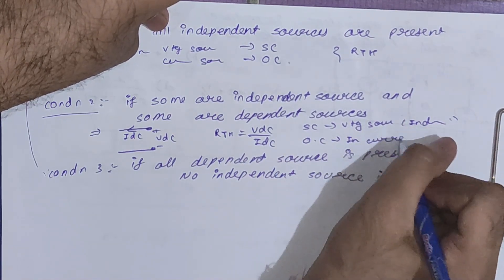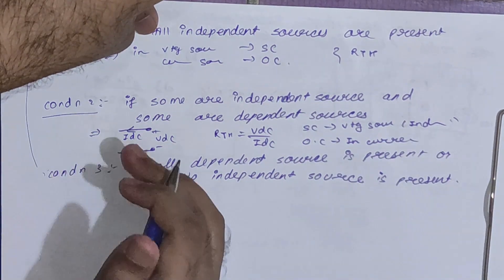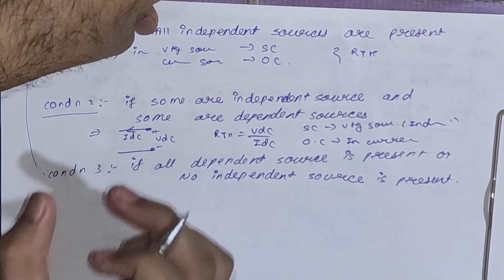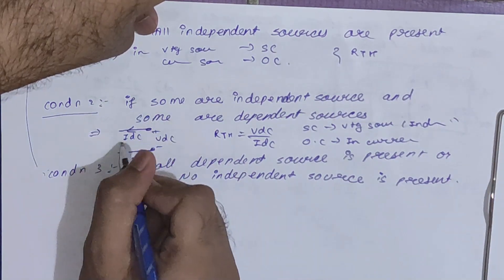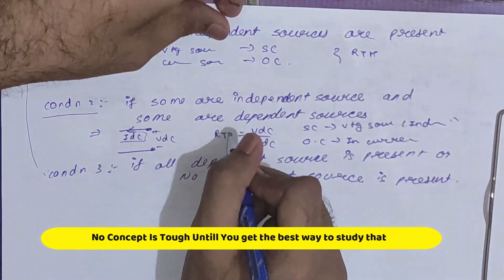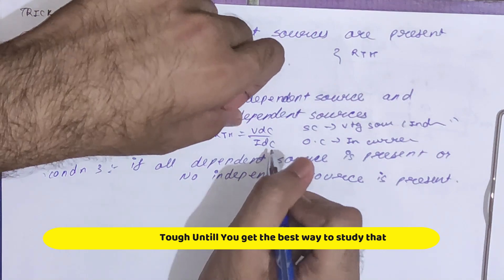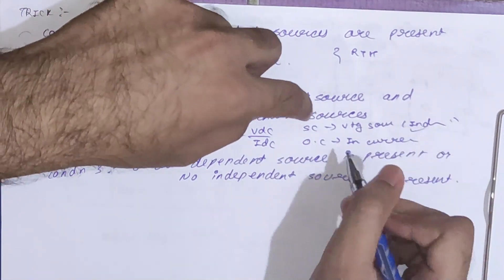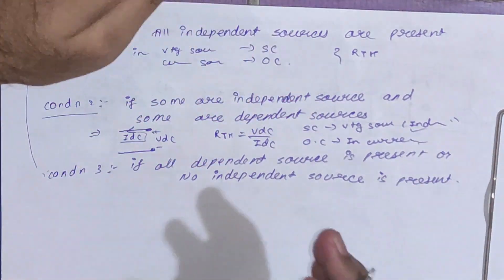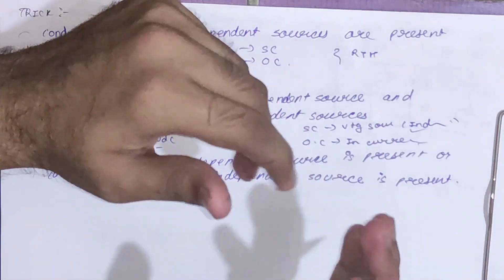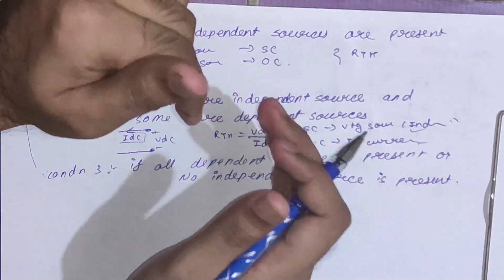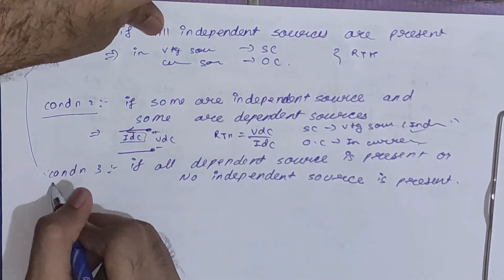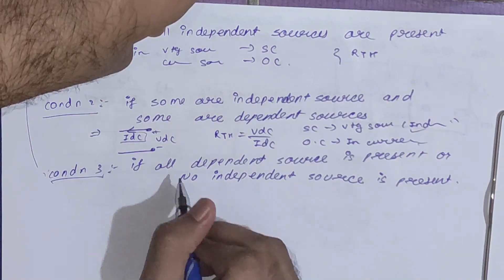While calculating Rth as Vdc by Idc, you assume Vdc voltage across your two points and Idc as the current flowing from Vdc. You have to short circuit the independent voltage source and open circuit the independent current source — basically replacing your independent sources by their internal impedance.